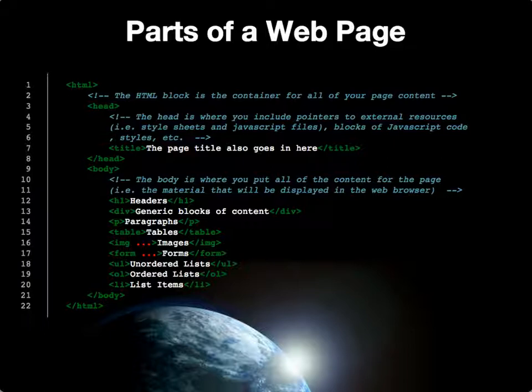In all web pages, you'll have a containing HTML block, and inside it two primary areas. The head area — starting on line 3 and ending on line 8 — typically contains information about the document as a whole, such as a title tag defining the page title, which may be displayed in a browser tab or window. You can also put meta tags, style definitions, JavaScript blocks, or links to external JavaScript or style files in the head.